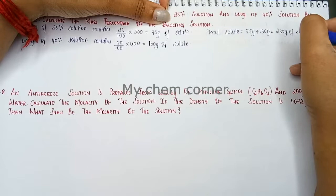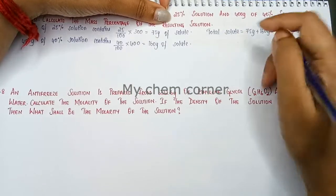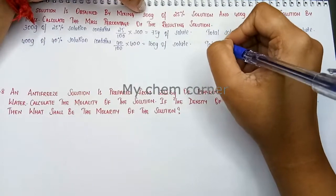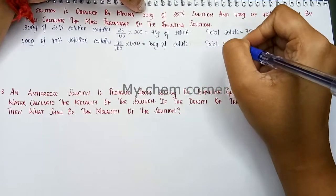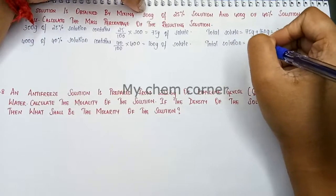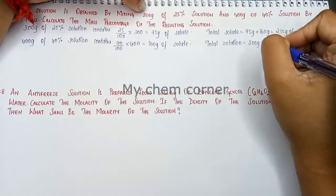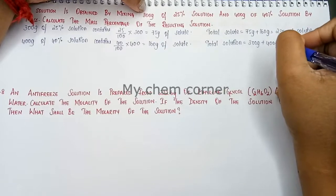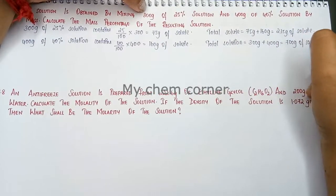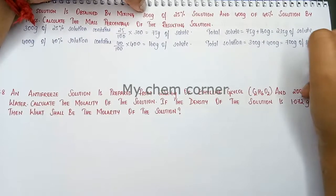Same thing for solution, because I have two different solutions here, so I can say that total solution equals 300 grams plus 400 grams, which is equal to 700 grams of solution.